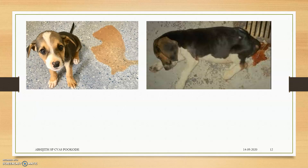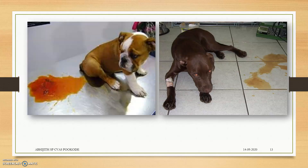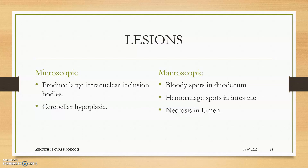You can see the picture of dogs having diarrhea — bloody diarrhea. You can see bloody stains found in the diarrhea. Now we move to the lesions — what are the main lesions.